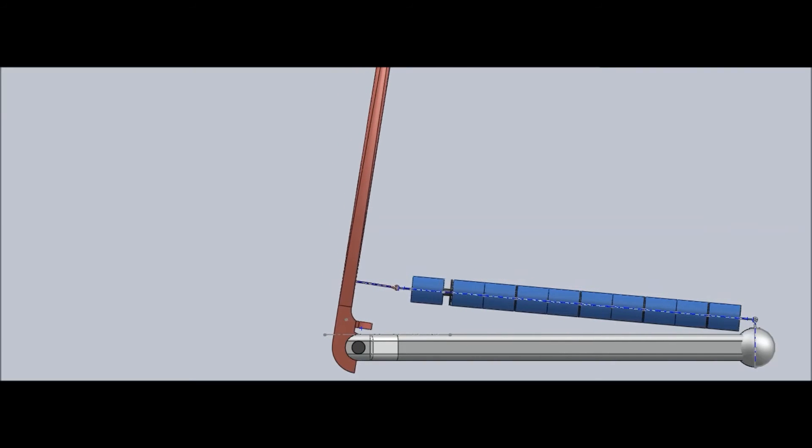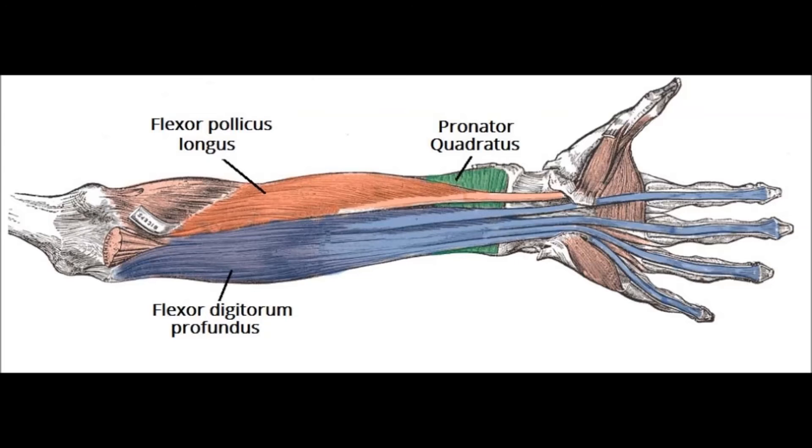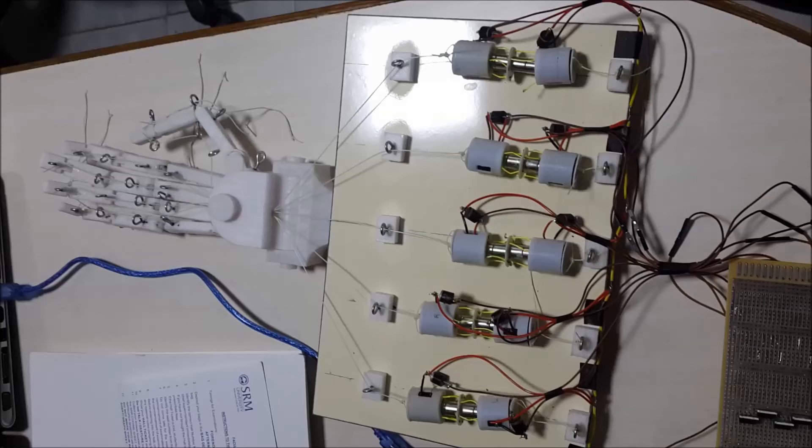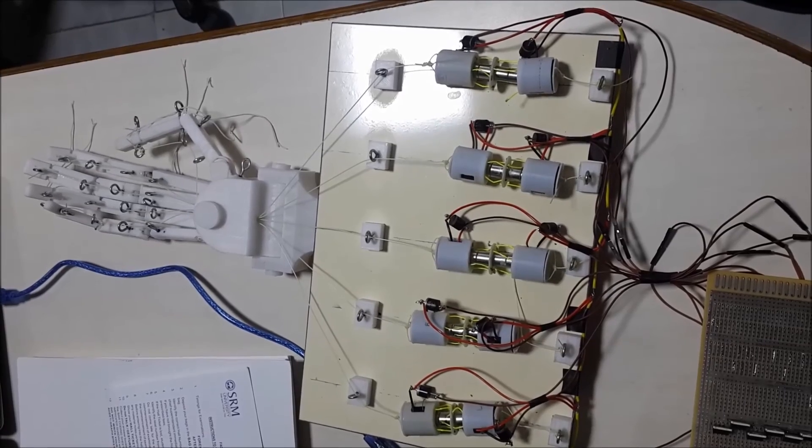The hand design will have all the degrees of freedom of a healthy human hand. But in this project, only flexor digitorum profundus muscles are imitated to actuate the design hand. Either extensor muscles or springs can be used for the extension or relaxation of fingers.